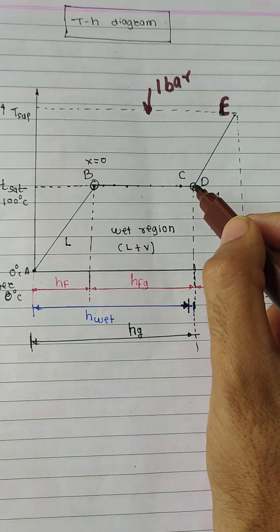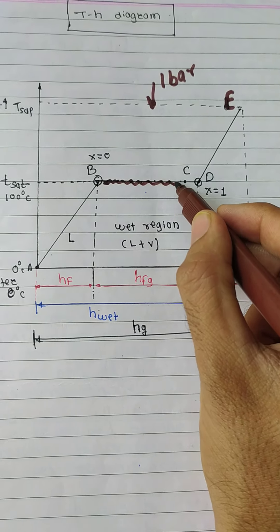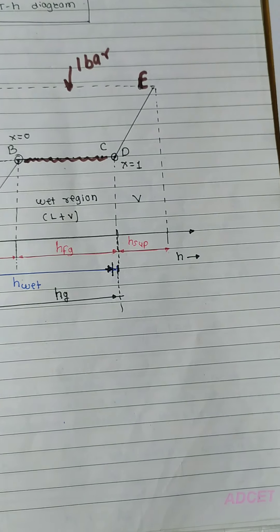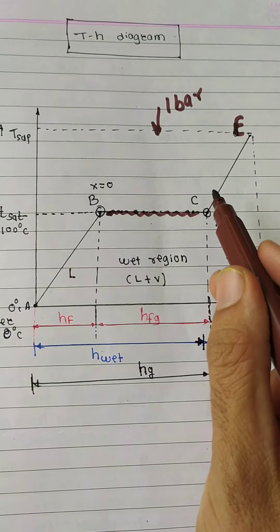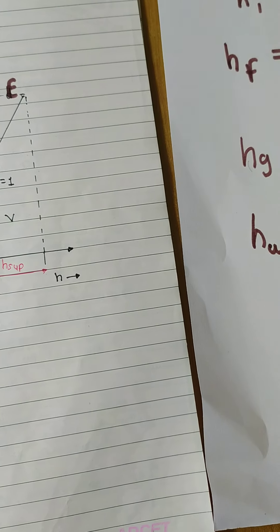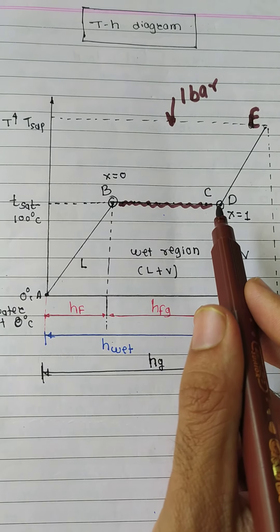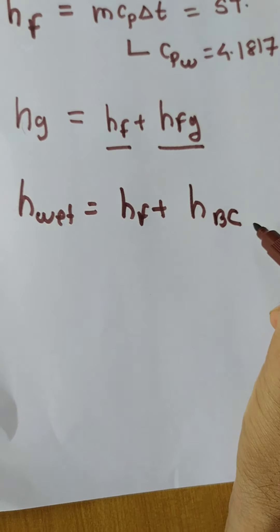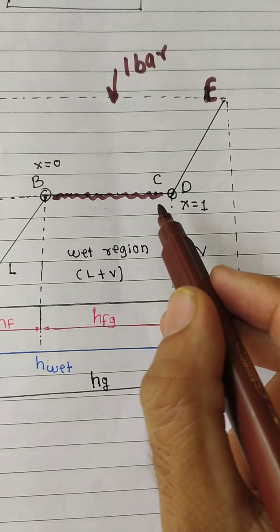Now, the steam in between B to D is the wet region. So we need to find out the enthalpy of wet steam. The formula for enthalpy of wet steam: while reaching point C, we need to add HF plus the addition of heat between B and C. There is one very important term introduced here — the dryness fraction, denoted by X. This formula indicates the quality of steam: how much dry steam is contained in 1 kg of wet steam.